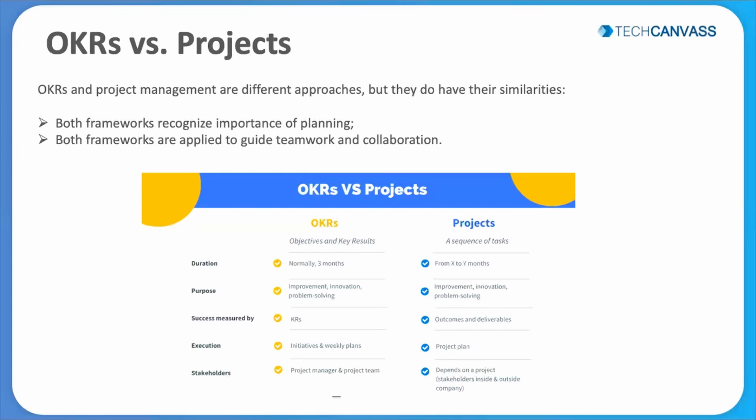Regarding success measurement, OKRs use key results as a success criteria, whereas projects use outcomes and deliverables as success criteria. Coming to execution, execution is majorly initiative-driven in OKR, and a project plan drives execution in projects.